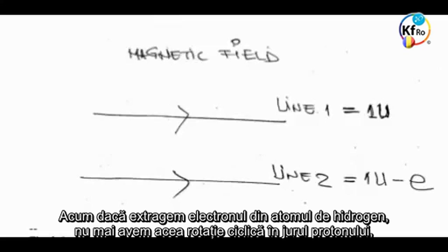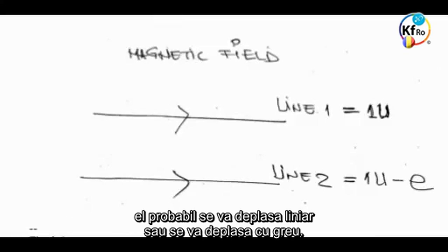But if you pull out the electron from the atomic hydrogen, we don't have cyclo-rotation around the proton. It's probably just traveling linearly or however it's traveling.